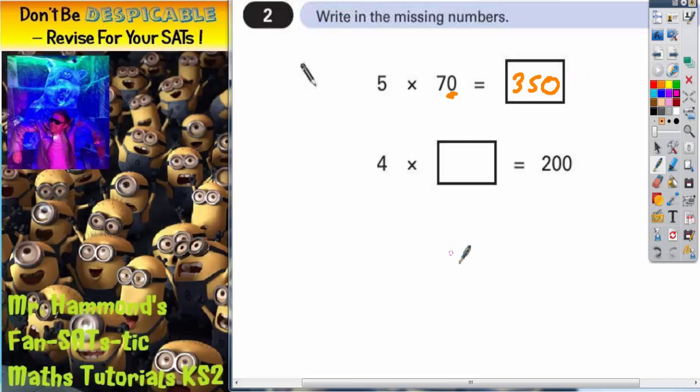The second one is not so straightforward. 4 multiplied by something makes 200. Well there's a couple of ways you should be doing this. You could say to yourself, if I've got to make 200, 4 somethings will make 200. What goes in each box? Well it would have to be 50. Because 4 50s will give you 200. So the answer is going to be 50.